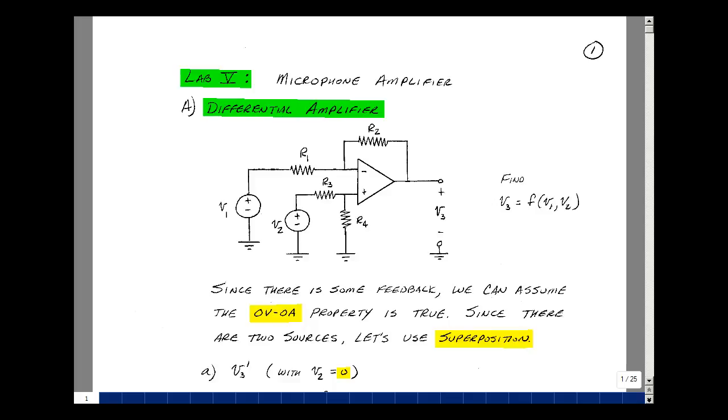Another problem with microphones is that they have long cables, and those cables act like antennas and pick up stray signals. The stray signal is common to the wires going from the microphone to the amplifier. If we had a circuit that could subtract the signal coming off the microphone, we could cancel the noise. We're going to use a differential amplifier circuit.